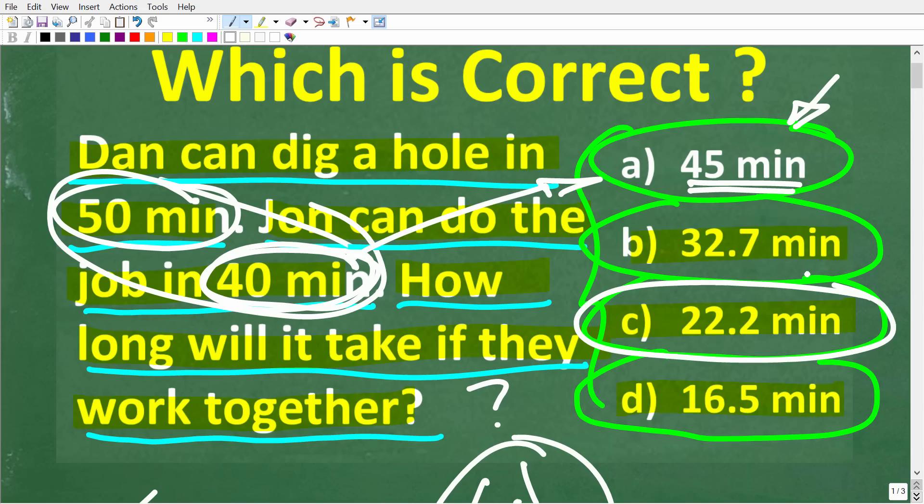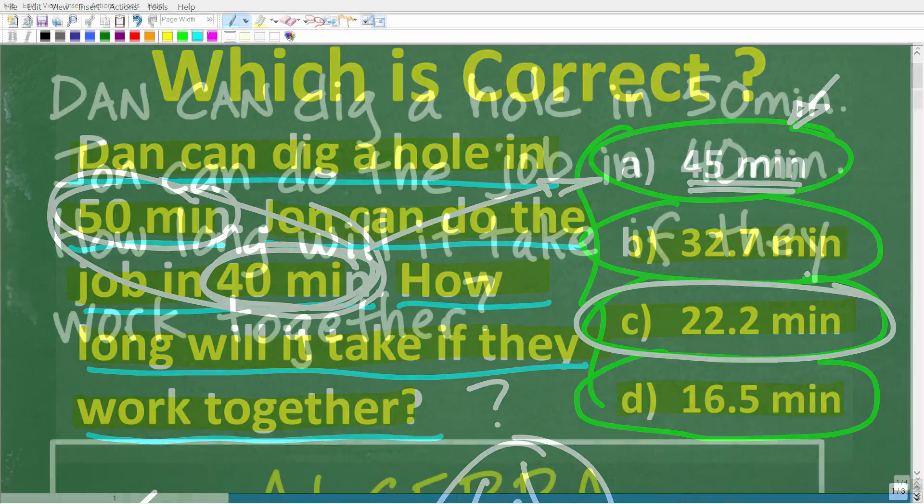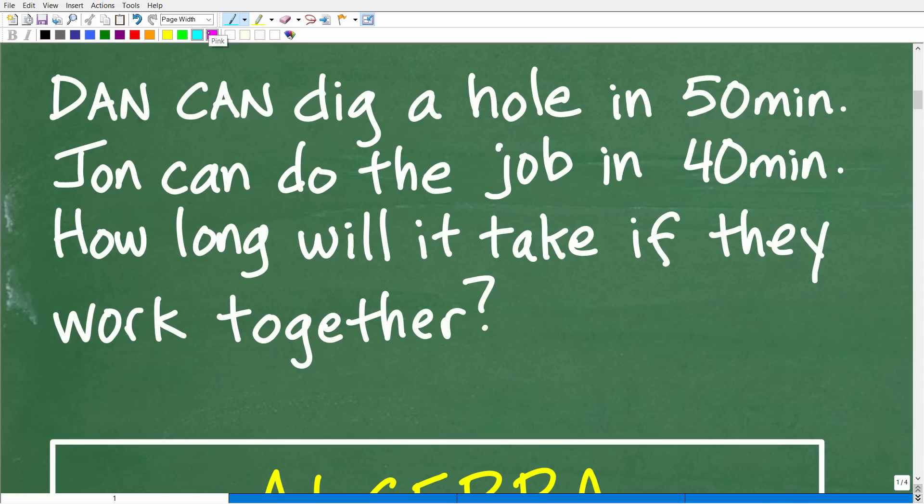So the only reasonable answers here are B, C, and D. And of course the correct solution is C. Let's go ahead and see how to solve this problem. But the first thing we want to do is recognize that we are dealing with a word problem. So read the thing at least three times. Just don't read a problem once and then just start doing stuff. That's like a recipe for disaster.